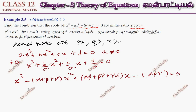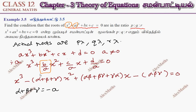From Vieta's formulas: α + β + γ = −b/a; αβ + βγ + γα = c/a; and αβγ = −d/a.